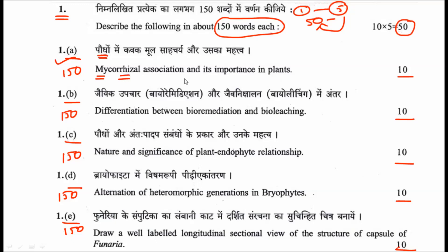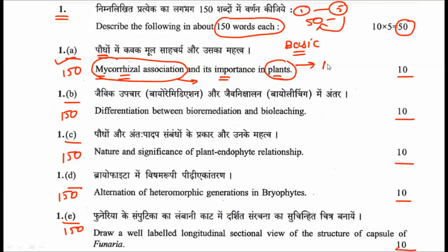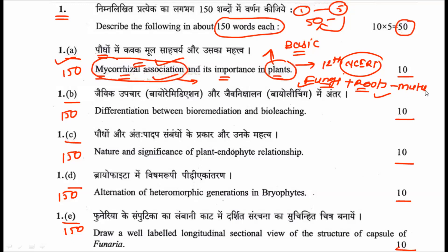The first sub-question asks about mycorrhizal association and its importance to plants. This is a very basic question; the content can be found in 12th NCERT itself. Mycorrhizal relationship is a mutualistic, symbiotic relationship between fungi and the roots of higher plants. The fungi get nutrition from the plant, while the plant roots gain a larger surface area for water absorption — both partners benefit from this association.